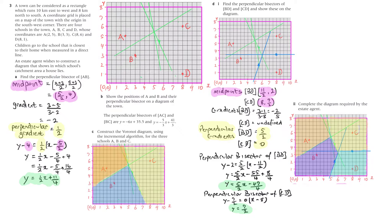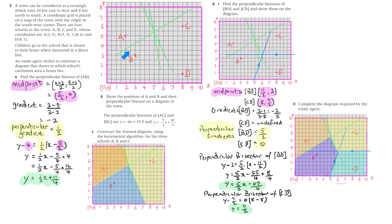Find the perpendicular bisector of AB. So the first thing we have to find is the perpendicular bisector — we'll find the equation of that line, the green line there. The first step, as we've done before, is to find the midpoint between A and B, and that's (5/2, 4). Remember, that's just the average: we take the x-values, add them together and divide by 2, and do the same with the y-values, and we've got the midpoint.